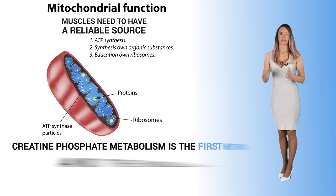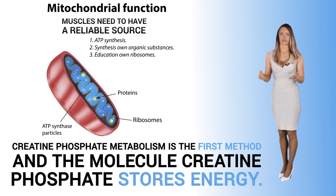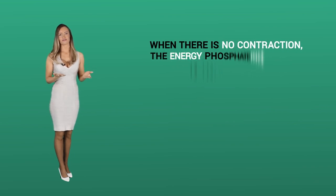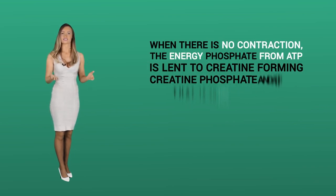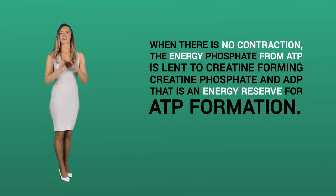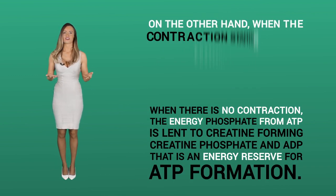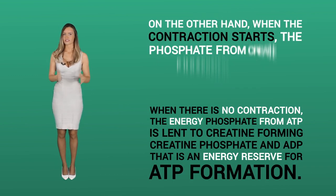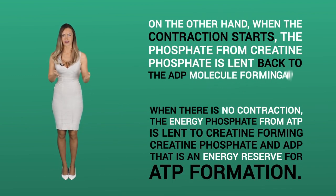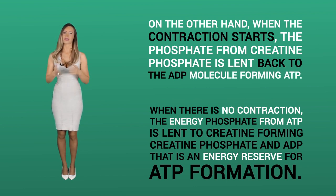Creatine phosphate metabolism is the first method, and the molecule creatine phosphate stores energy. When there is no contraction, the energy phosphate from ATP is lent to creatine, forming creatine phosphate and ATP — that is an energy reserve for ATP formation. On the other hand, when the contraction starts, the phosphate from the creatine phosphate is lent back to the ADP molecule, forming ATP.